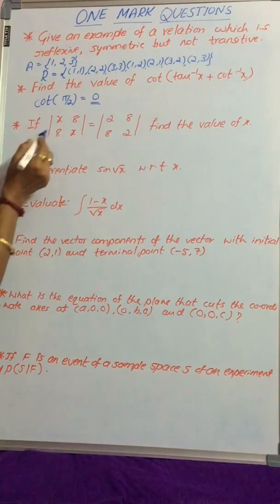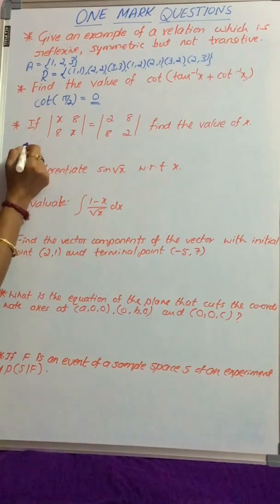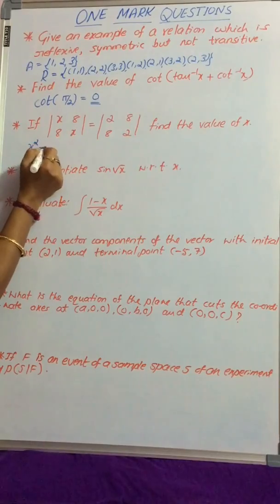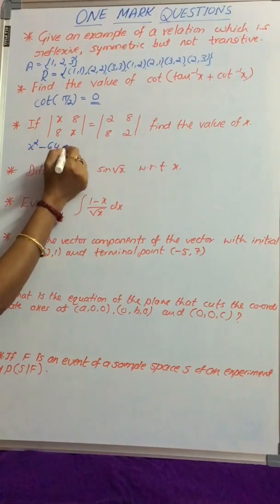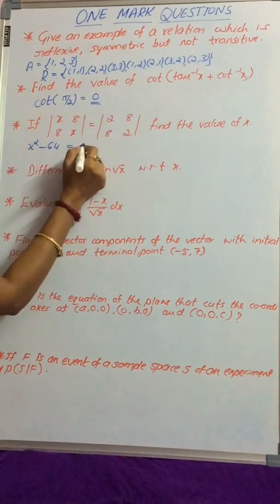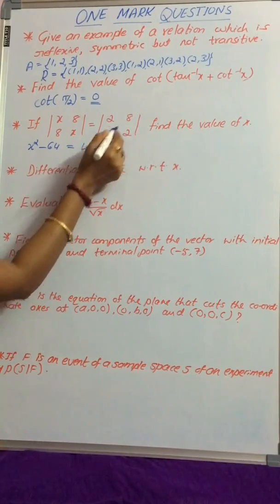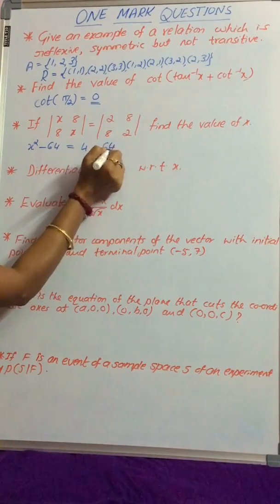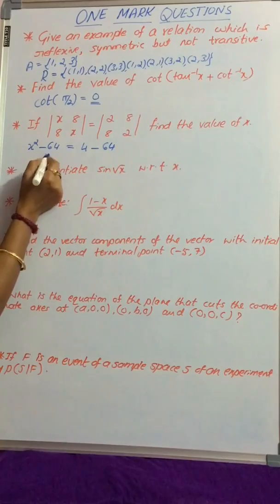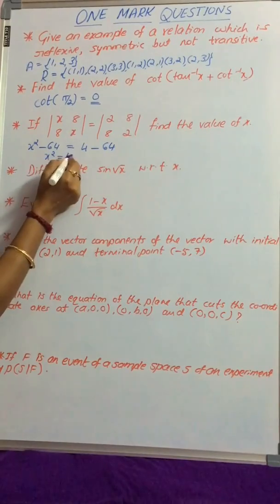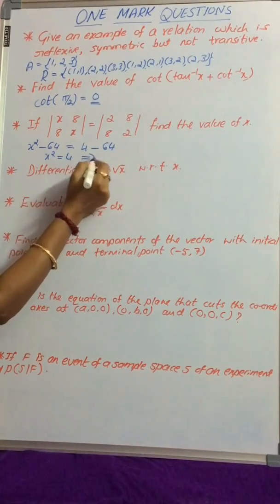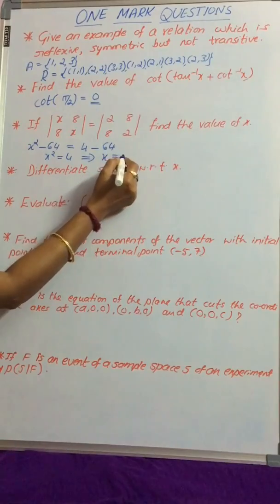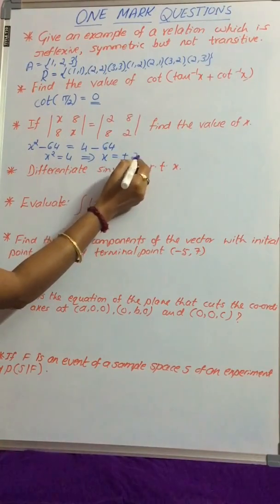For this, first get the value of this determinant. x² - 64 equals the value of this determinant, which is 4 - 64. That is x² = 4. This implies x = ±2.